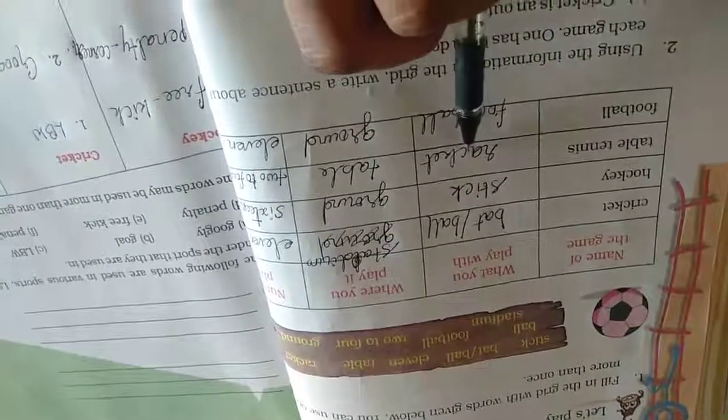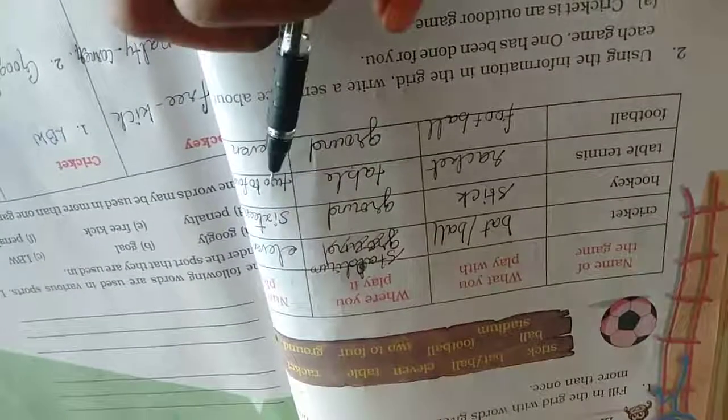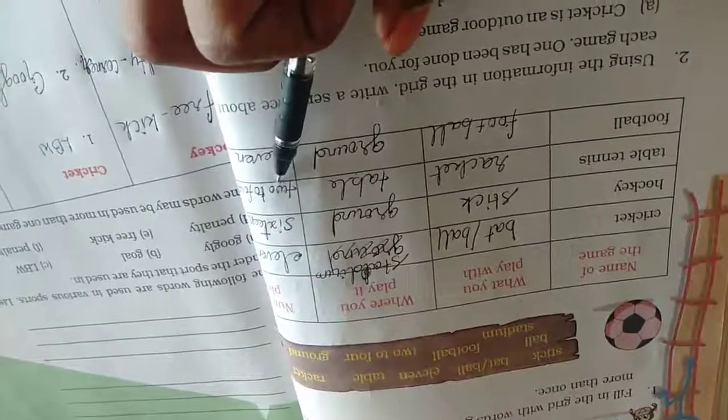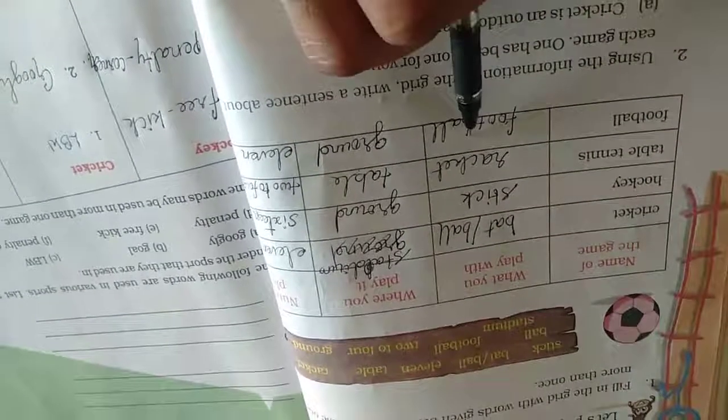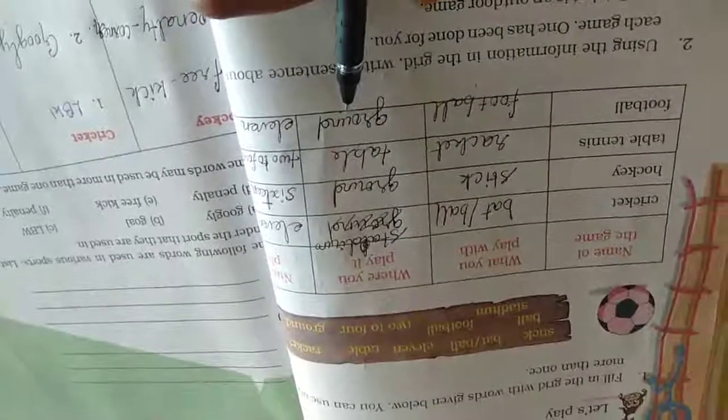Table tennis: racket. Where we will play? Table. How many members to play? Two to four. Football: football. Where we will play? Ground. Totally eleven members in your team.